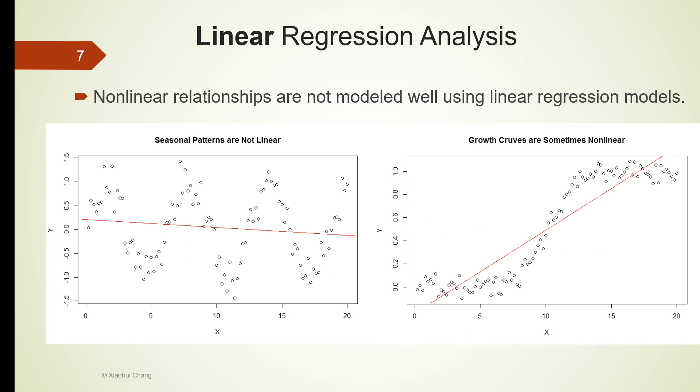In some situations, linear regression model is not appropriate too. For example, repeating cycles, like the graph of seasonally affected data on the left, are not modeled well with a straight line. Growth curves are often logistic, that is to say, they start slow, grow very quickly for a while, and then taper off.